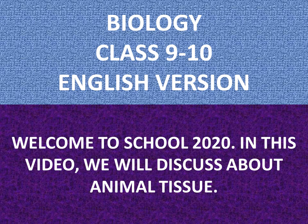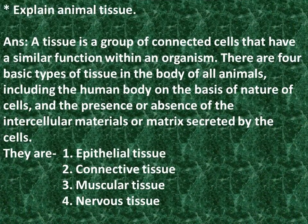Welcome to School 2020. In this video, we will discuss about Animal Tissue. A tissue is a group of connected cells that have a similar function within an organism. There are four basic types of tissue in the body of all animals, including the human body, on the basis of nature of cells and the presence or absence of the intercellular materials or matrix secreted by the cells.